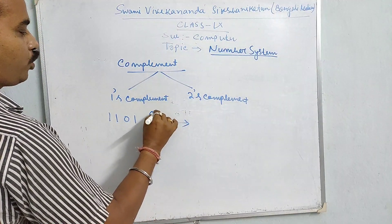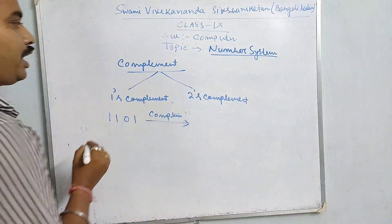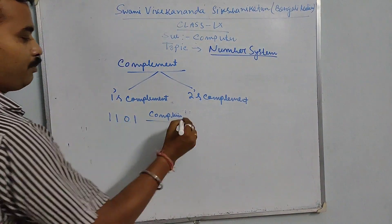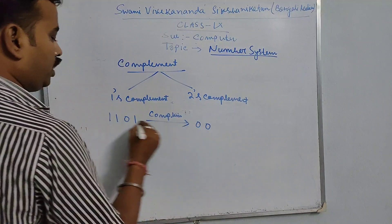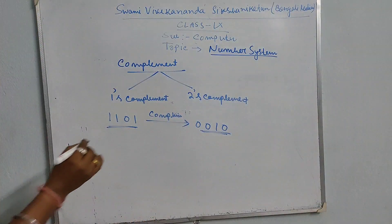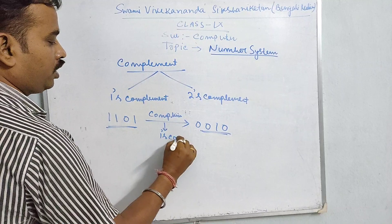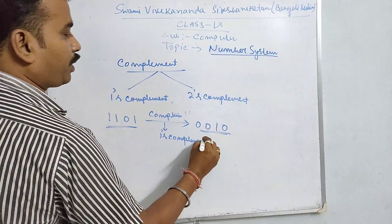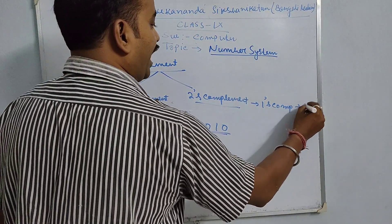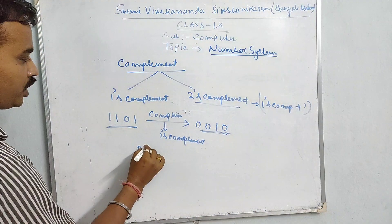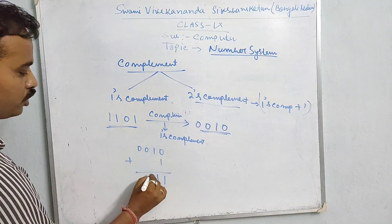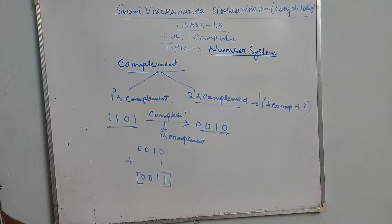For 2's complement: take binary number 1101. For 1's complement, simply flip the bits — 1 changes to 0, and 0 changes to 1. So 1101 becomes 0010. This is actually called the 1's complement. For 2's complement, we take the 1's complement and add 1.